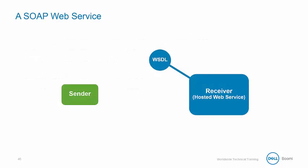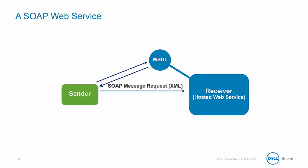Before making requests to or from a web service, it's important for the sender to understand how to invoke the web service. This information is stored in the WSDL file, and that allows the sender to understand what type of message needs to be sent to the receiver and how those responses will be returned. Once the sender understands how to interact with the web service, a request is made to the receiver. This request is in the form of a SOAP envelope, which includes a header and a body containing the XML details. The receiver then sends the response back to the sender.